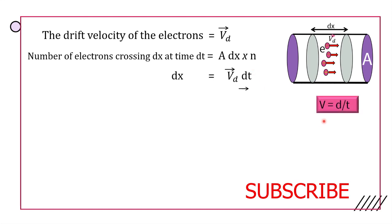What is velocity? Distance by time. Distance dx equals velocity Vd times time dt. So dx is equal to Vd into dt.